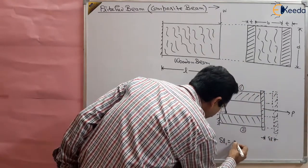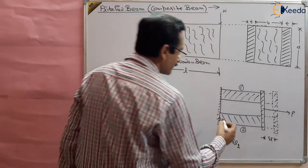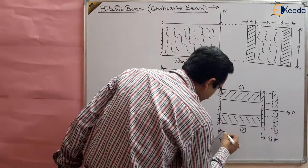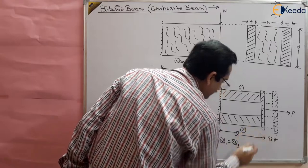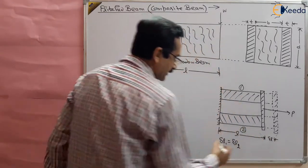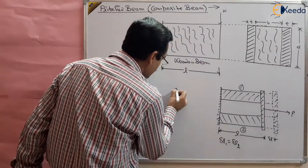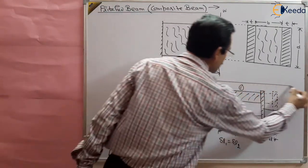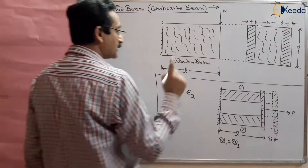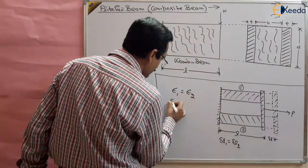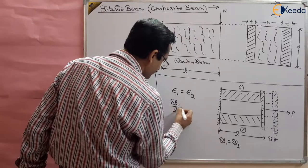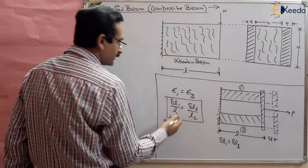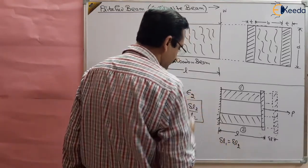We obtained two equations: the change in length was uniform, the same for both materials. So we wrote that delta L1 equals delta L2. Because the length of both bars is the same, the strain will also be the same — so strain in material one equals strain in material two.